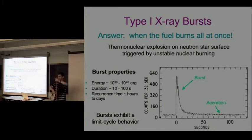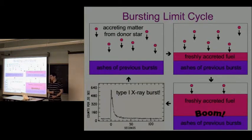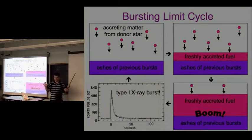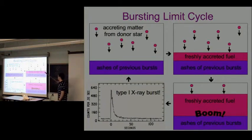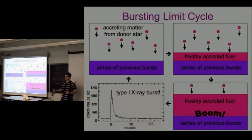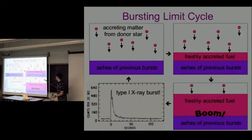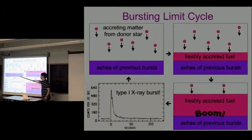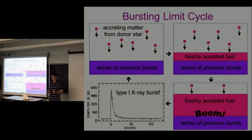When nuclear burning occurs, the entire layer burns up, creates heavy ashes, and then you start again. Starting with a bare neutron star, you accrete matter, a layer builds up, at the base it's getting hotter and denser, and inevitably nuclear burning will occur. When that happens, the entire layer burns in a type 1 X-ray burst and produces heavy ashes on which the accreted matter subsequently lands.